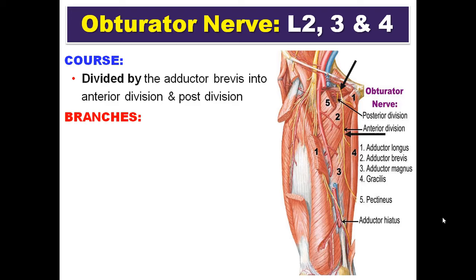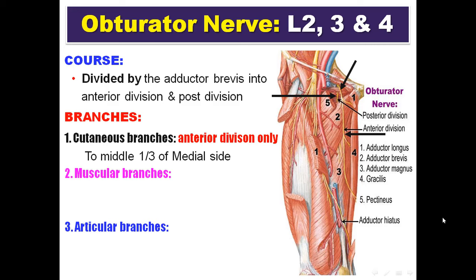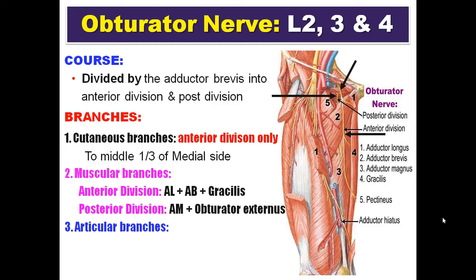The anterior division lies anterior to the adductor brevis, and the posterior division lies posterior to the adductor brevis. Regarding branches — cutaneous, muscular, and articular. The anterior division gives a cutaneous branch to the middle third of the medial side of the thigh. For muscular branches, the anterior division supplies three muscles: adductor longus, adductor brevis, and gracilis. The posterior division supplies two muscles: the pubic part of adductor magnus and obturator externus. For articular branches, the anterior division supplies the hip joint and the posterior division supplies the knee joint.